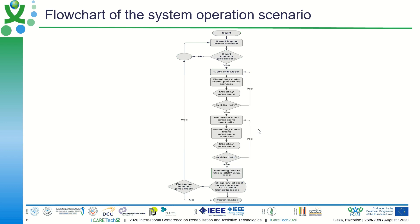This is the flowchart of the system operation scenario. First, we have a button for taking measurements. Once this button is pressed, we start the cuff inflation. We then read measurements for about 10 seconds, then release and deflate the cuff. We take measurements again and process this data to extract what is called mean arterial pressure, then display this value on the LCD display, and keep looping in the program.